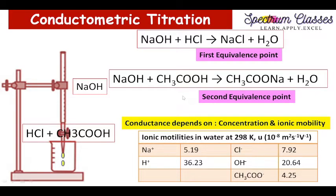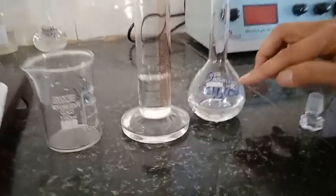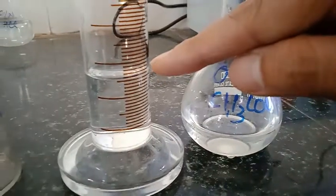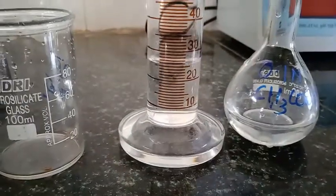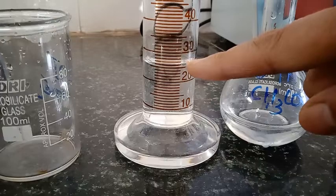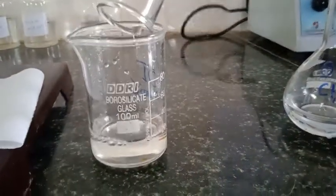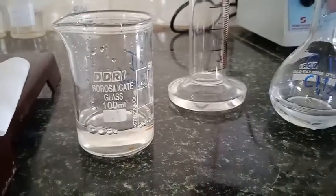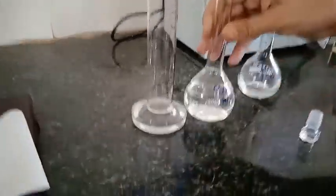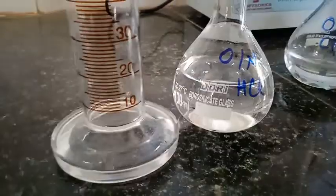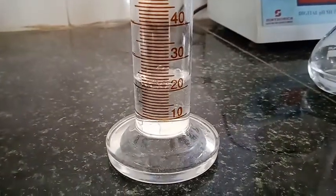I have taken this acetic acid into this measuring cylinder — 25 ml — and I am going to transfer it into the beaker, which is previously rinsed with acetic acid only. Now I am going to take its conductance value, and at the same time I am just going to transfer 25 ml of HCl into the measuring cylinder.